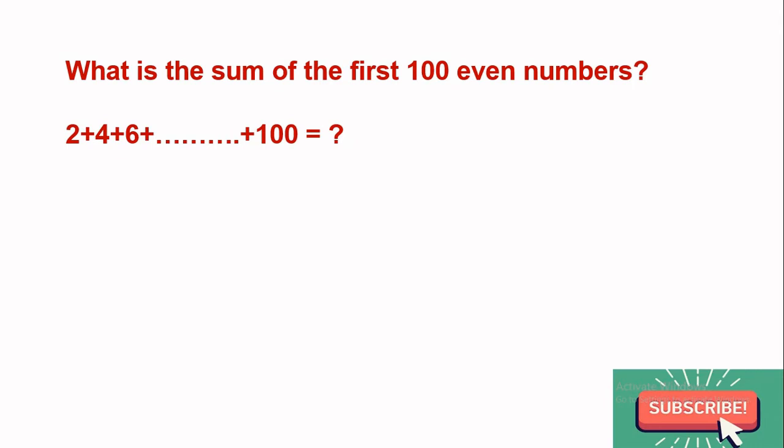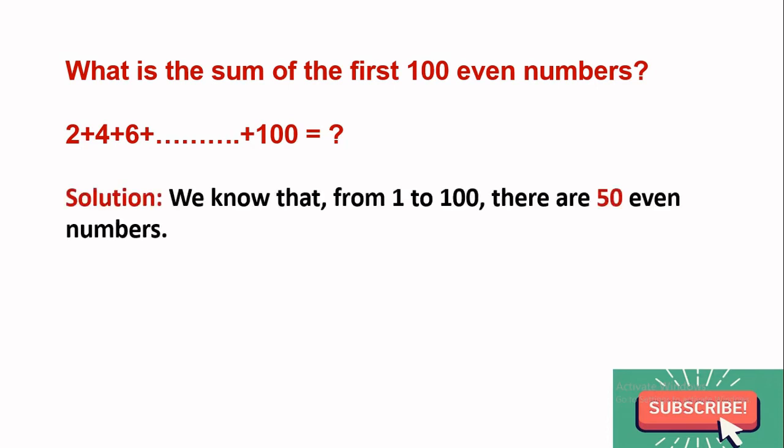We know that from 1 to 100, there are 50 even numbers. Half of them are even numbers and half are odd numbers.